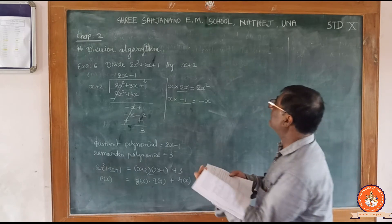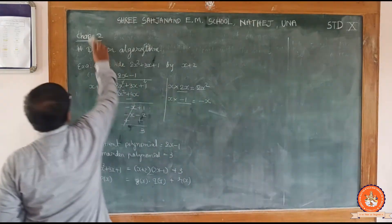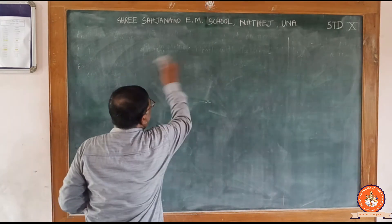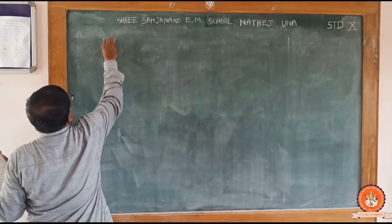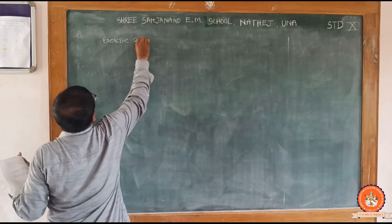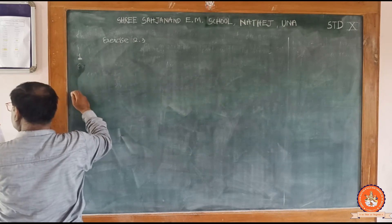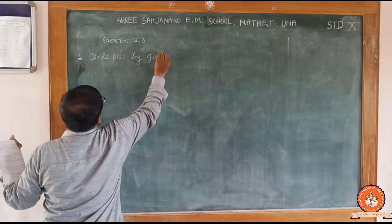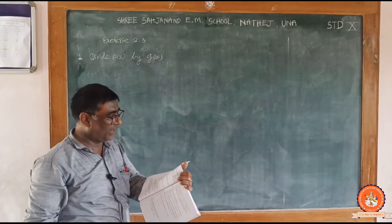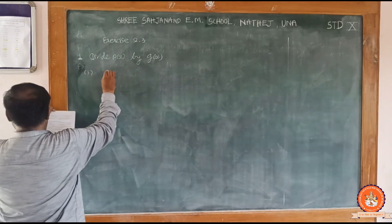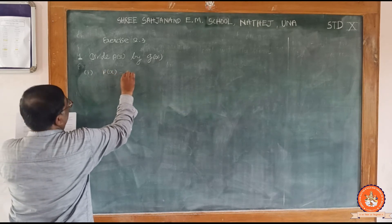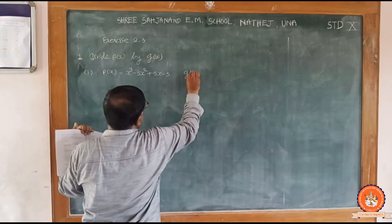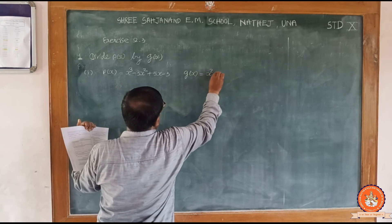Now we go to exercise 2.3, question number 1: divide P(x) by G(x). Here P(x) is the dividend polynomial and G(x) is the divisor polynomial.